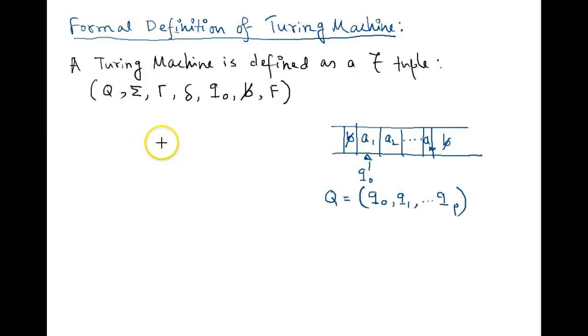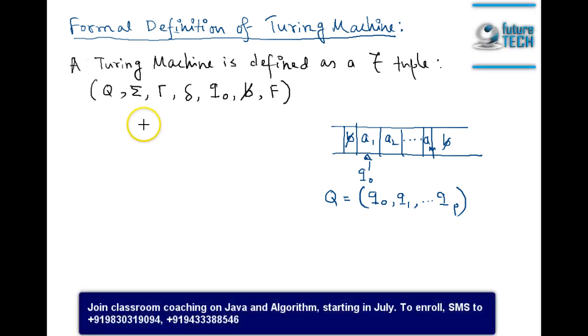Here is the formal definition of Turing machine. A Turing machine is defined as a seven-tuple: Q the set of states, Sigma the set of input alphabet, Gamma the set of tape alphabet,